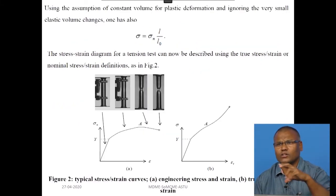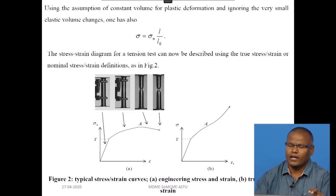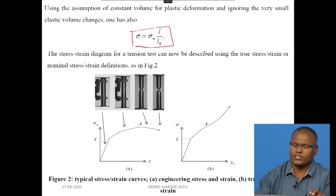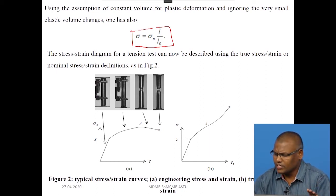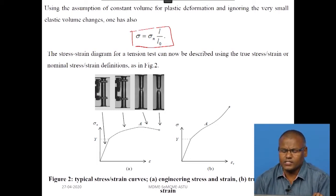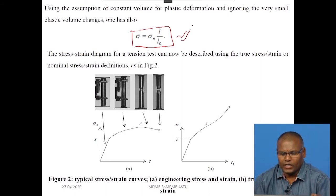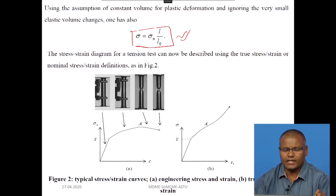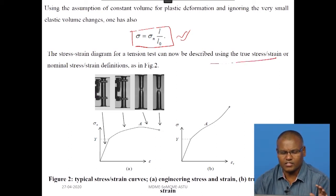Furthermore, we can relate the true stress to nominal stress during plastic deformation. Since volume remains constant in plastic deformation, the change of volume is constant. This can be linked to stress as: sigma_true = sigma_n × (L/L0), which gives you the true stress of the material. The stress-strain diagram from a tension test can thus be described using both true stress and nominal stress-strain definitions.